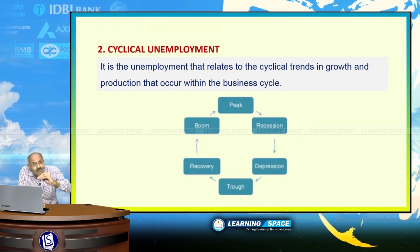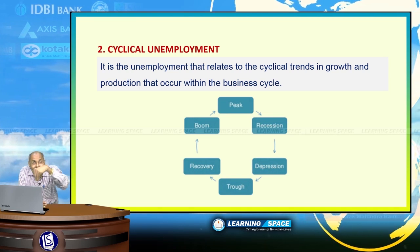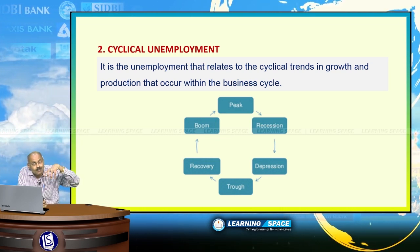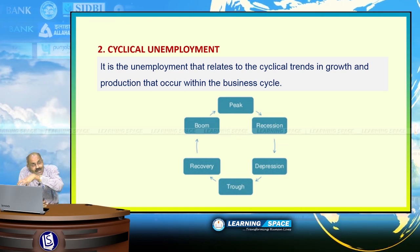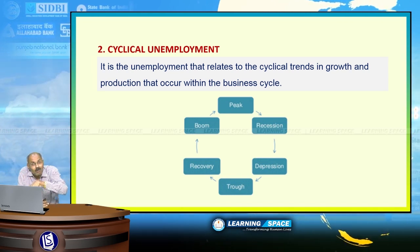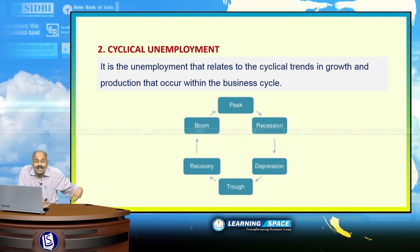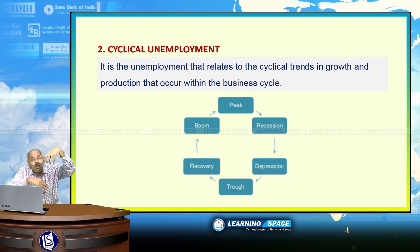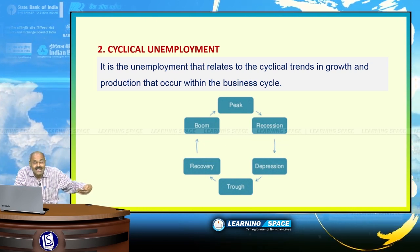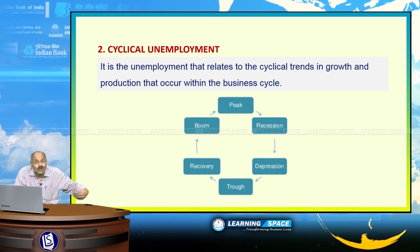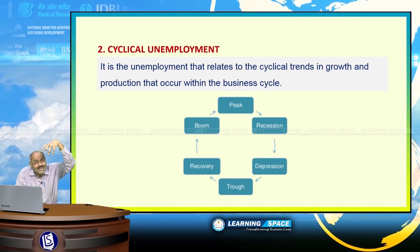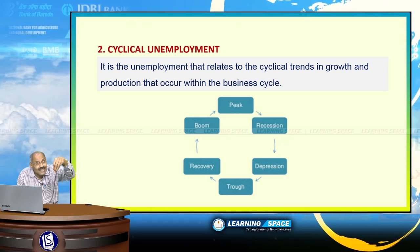The second type is cyclical unemployment, which relates to cyclical trends in growth. The business cycle has four phases: boom, recession, depression, and recovery. During boom time, unemployment rates are low and lot of employment is generated. During depression or recession, several jobs are lost and unemployment rates are very high. This is cyclical unemployment.